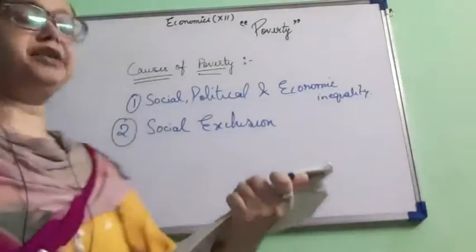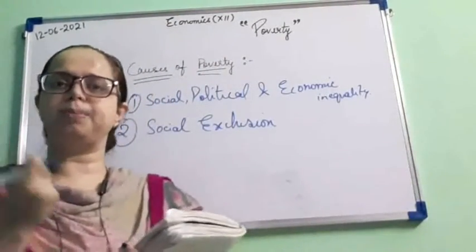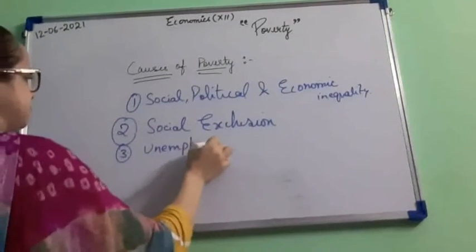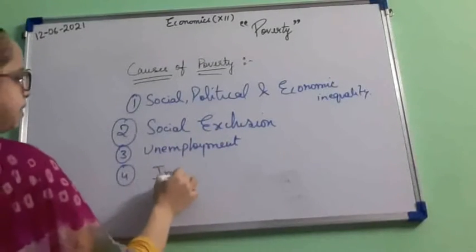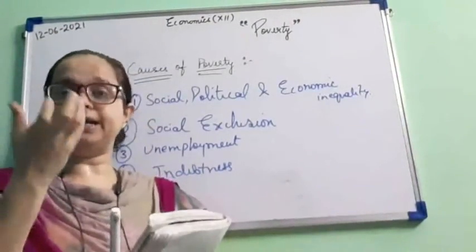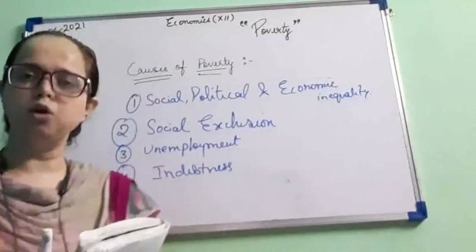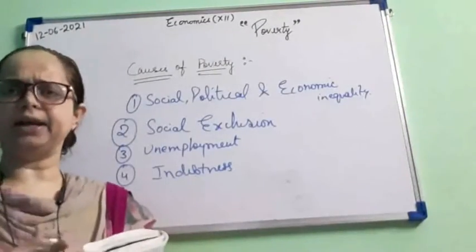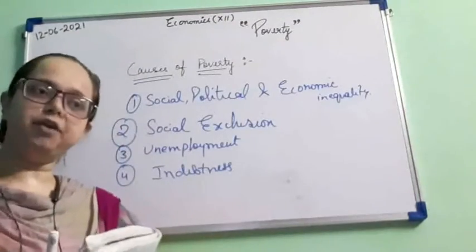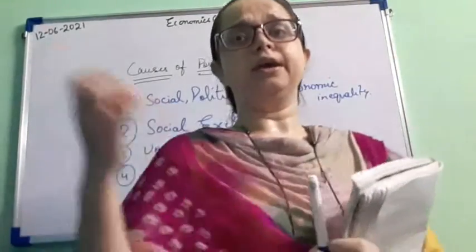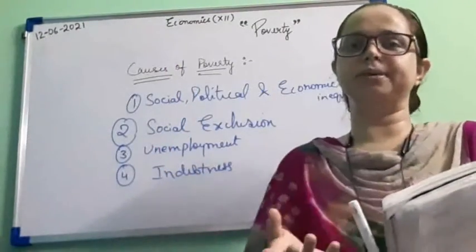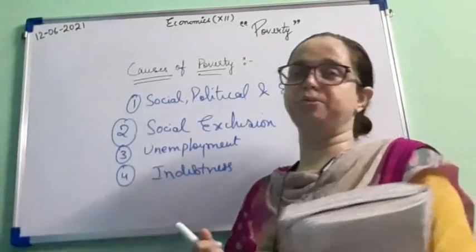Third is unemployment — it is the biggest cause of poverty. Next is indebtedness. Indebtedness means what we discussed as the 'debt trap' — the poor take loans from somewhere but are unable to repay those funds. To repay, they take another loan, and in this cycle they keep getting trapped again and again. This is the problem of indebtedness.